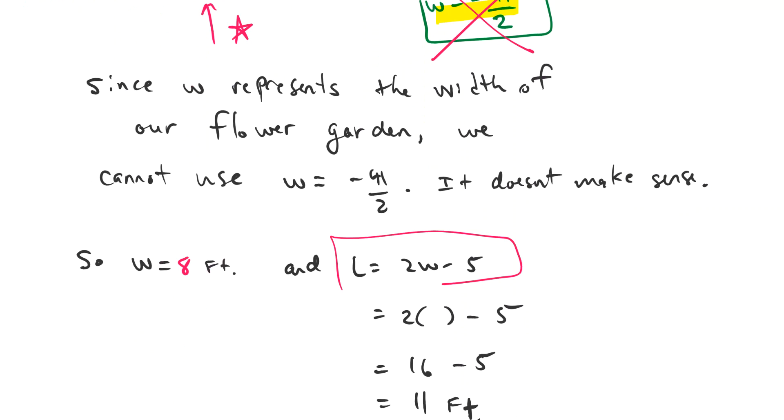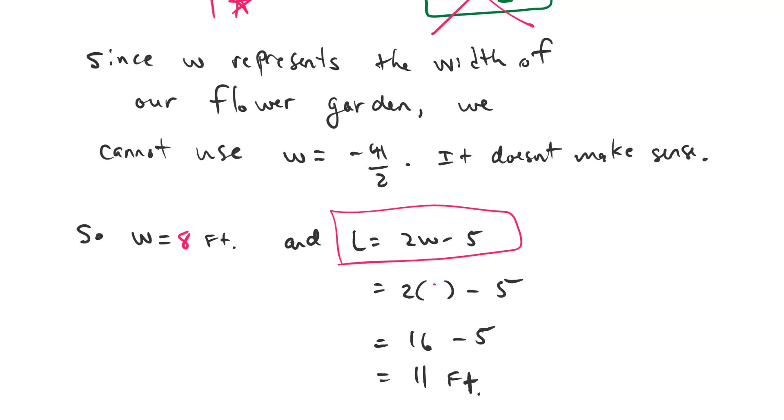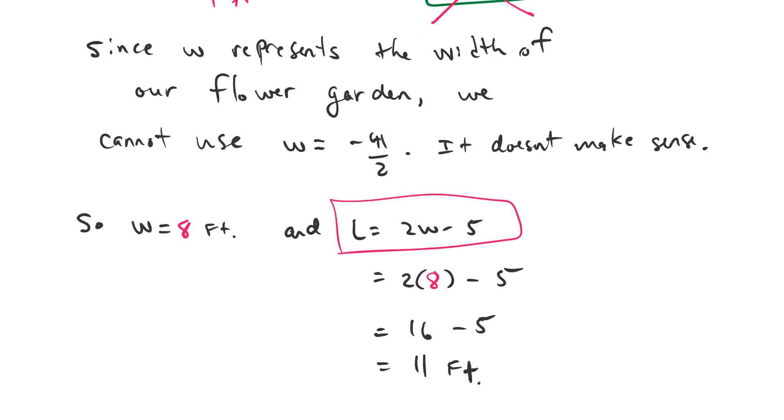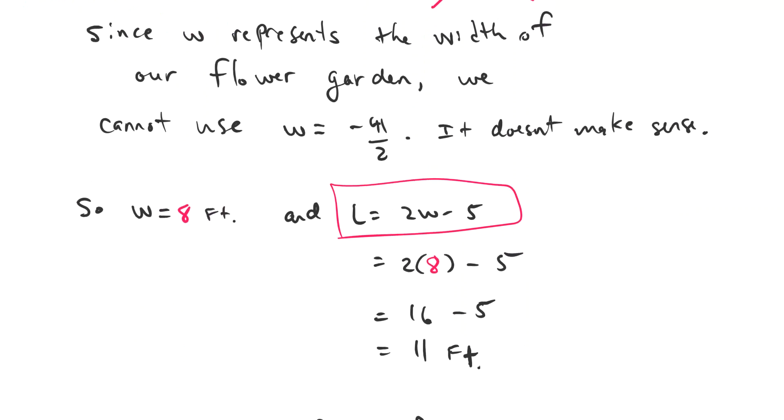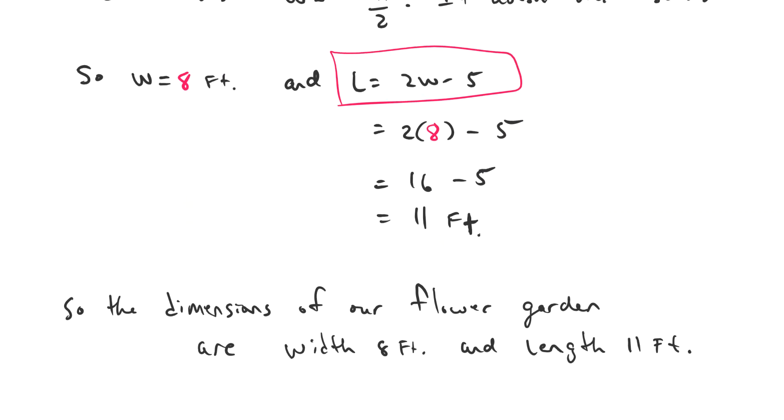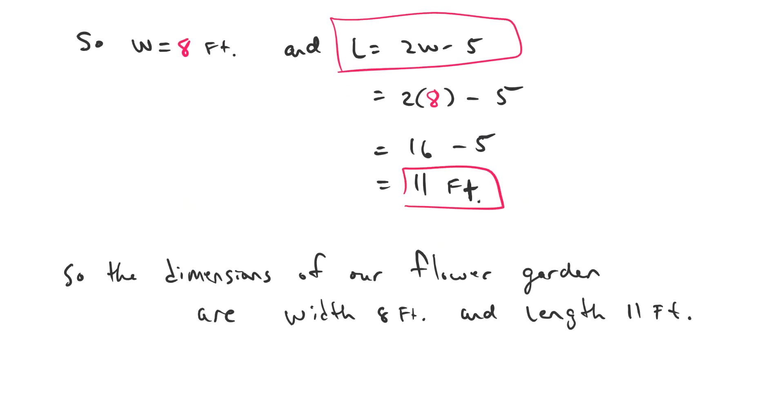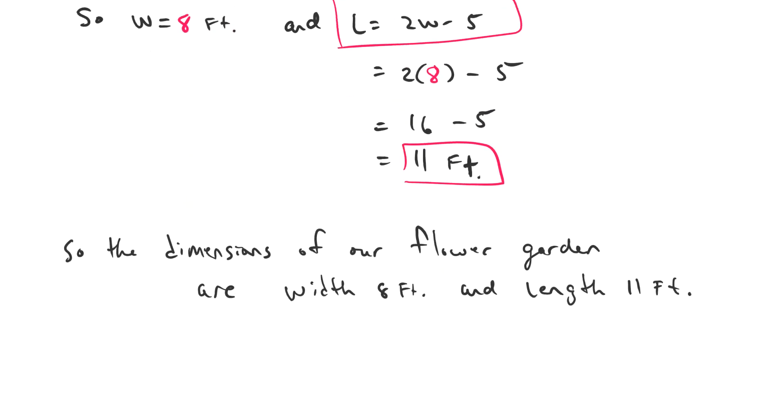We plug that 8 back into our length formula. We get 16 minus 5, which is 11. So our final answer then—the dimensions of our flower garden are: the width is 8 feet and the length is 11 feet.